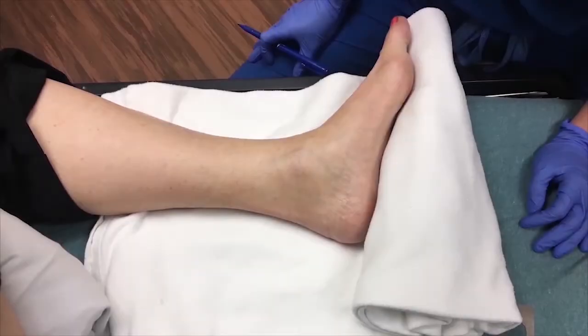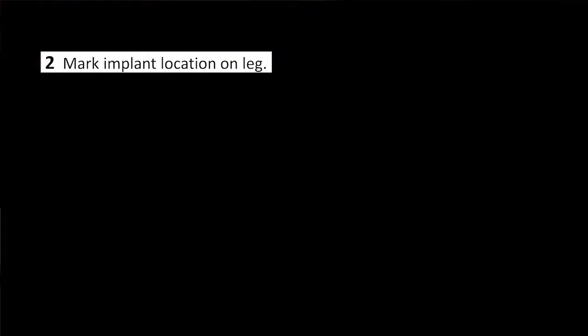Step 1: Position and Prepare Patient. Remove shoes, socks, and trousers. Position the patient with the leg externally rotated such that the medial ankle and malleolus surface are facing up.